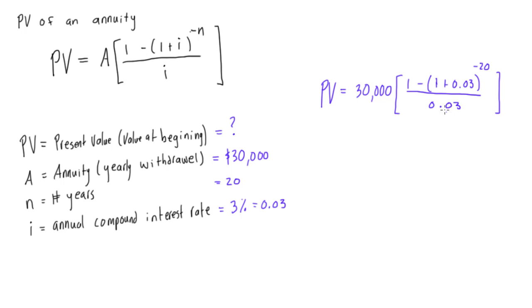All right, so if we go ahead, we can combine this if you want to simplify it a little bit. I'll write out all the steps, but in practice you won't be doing all of these individual steps. So we'll have 30,000 times 1 minus 1.03 to the power of negative 20, all over 0.03.